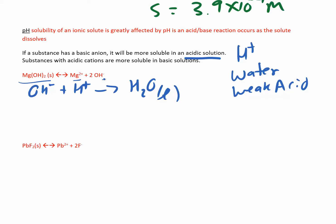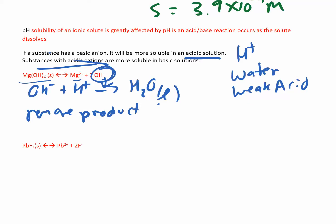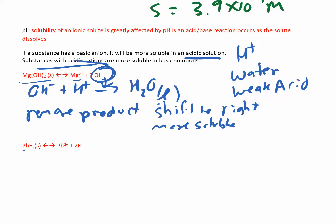Under acidic conditions, magnesium hydroxide dissociates into Mg²+ and OH⁻ ions. The hydroxide ion interacts with the H+, so its concentration decreases. By Le Chatelier's principle, removing a product shifts the reaction to the right, making it more soluble. So magnesium hydroxide under acidic conditions becomes more soluble.